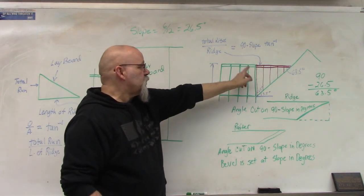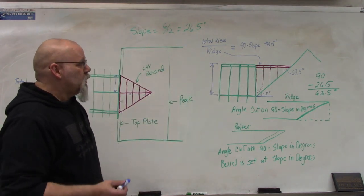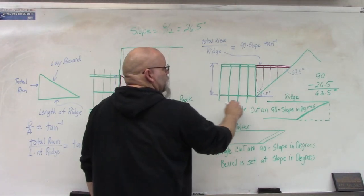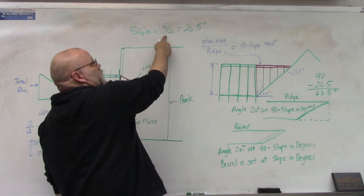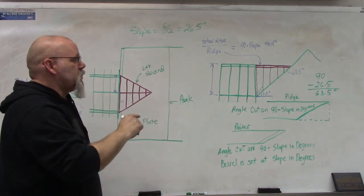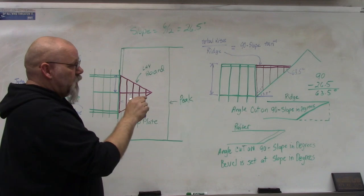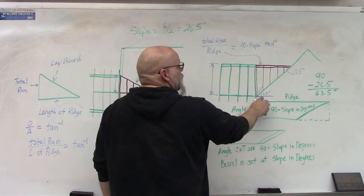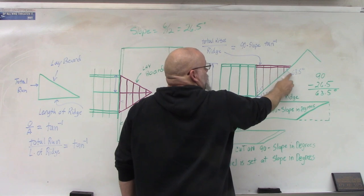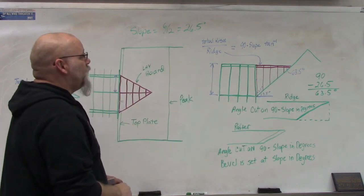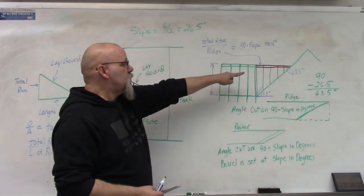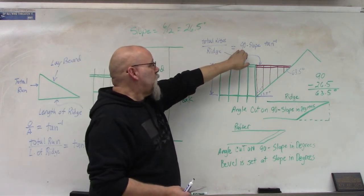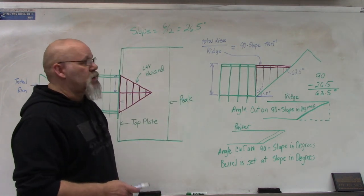Now we can figure out the length of the ridge board. Using a little bit of geometry, we know that this angle down here is 63.5 degrees because I gave this a slope of 6/12, which is 26.5 degrees. So 90 minus 26.5 gives us 63.5 degrees. To find the ridge board length, we're going to use this equation: take the total rise divided by the tangent of 90 minus the slope.